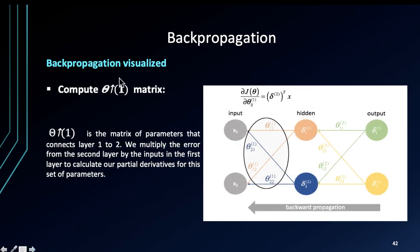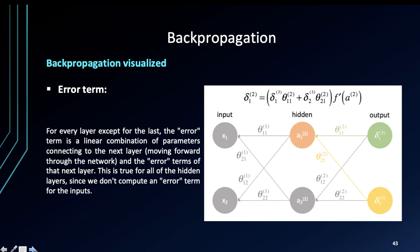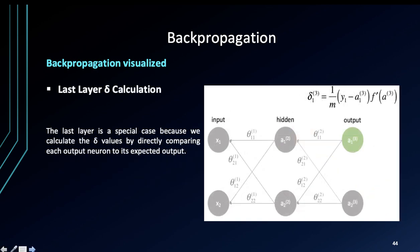Then we compute the theta 1 matrix like so in our backpropagation. For every layer except for the last, the error term is a linear combination of parameters connecting to the next layer, moving through the network and error terms of that next layer. This is true for all hidden layers since we don't compute an error term for the inputs. This is the last layer calculation.